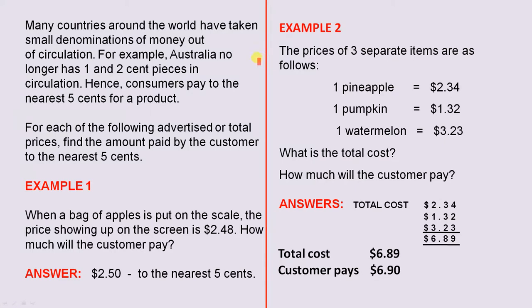Many countries around the world have taken small denominations of money out of circulation. For example, Australia no longer has 1 and 2 cent pieces in circulation. Hence, consumers pay to the nearest 5 cents for a product. For each of the following advertised or total prices, find the amount paid by the customer to the nearest 5 cents.